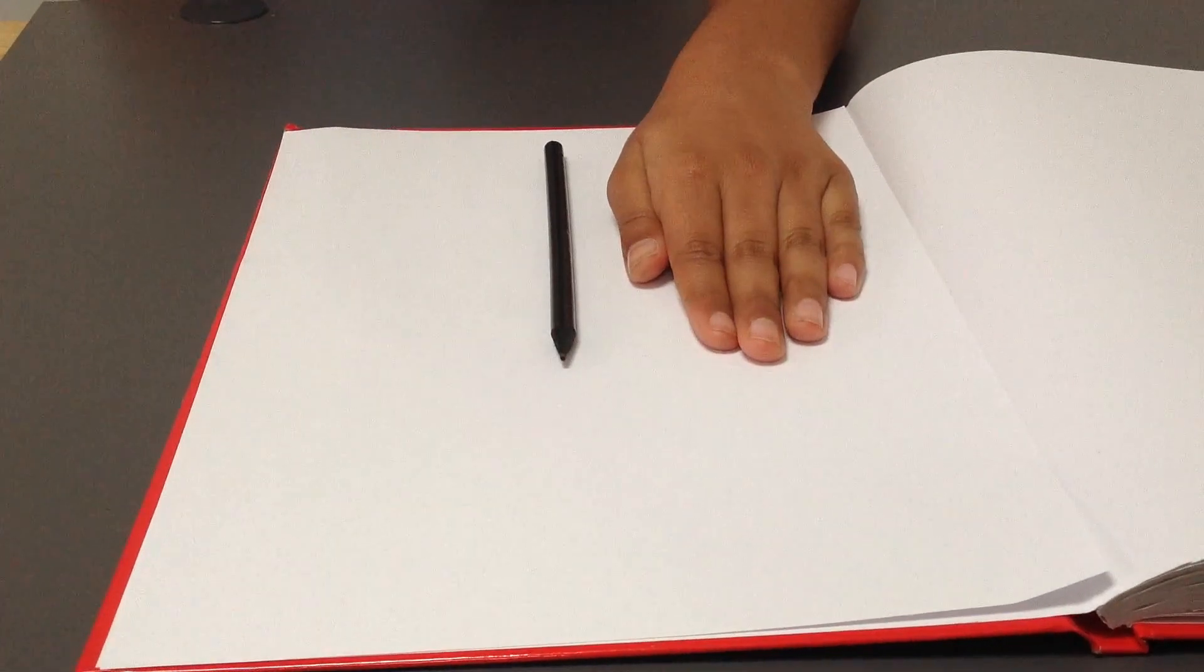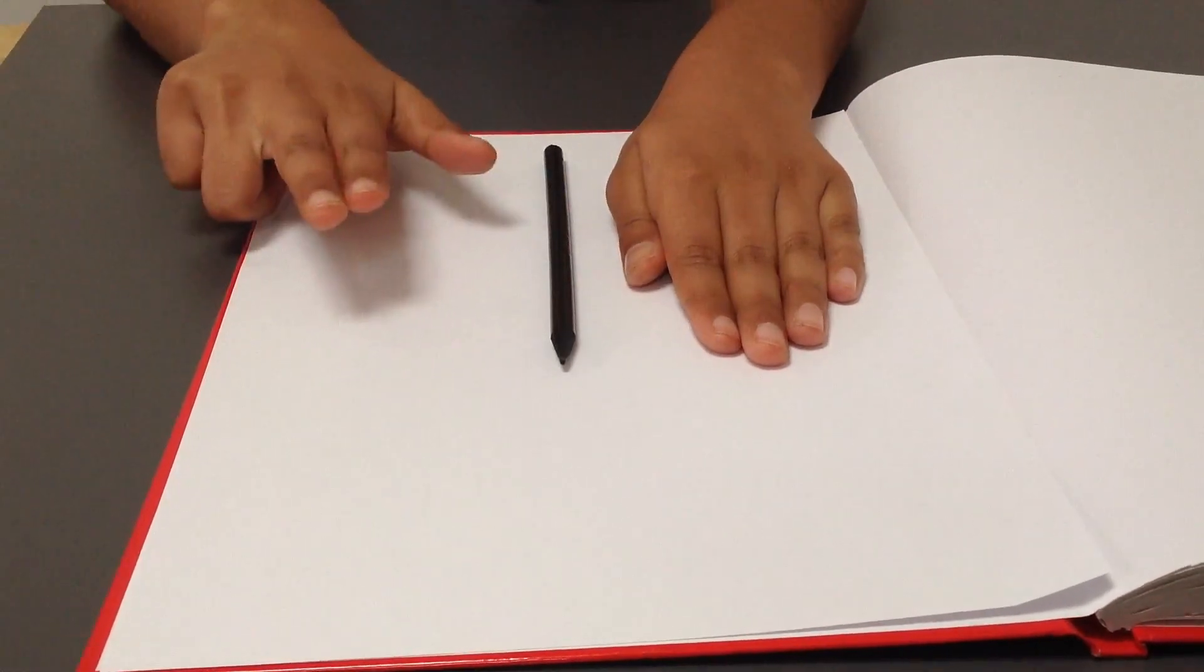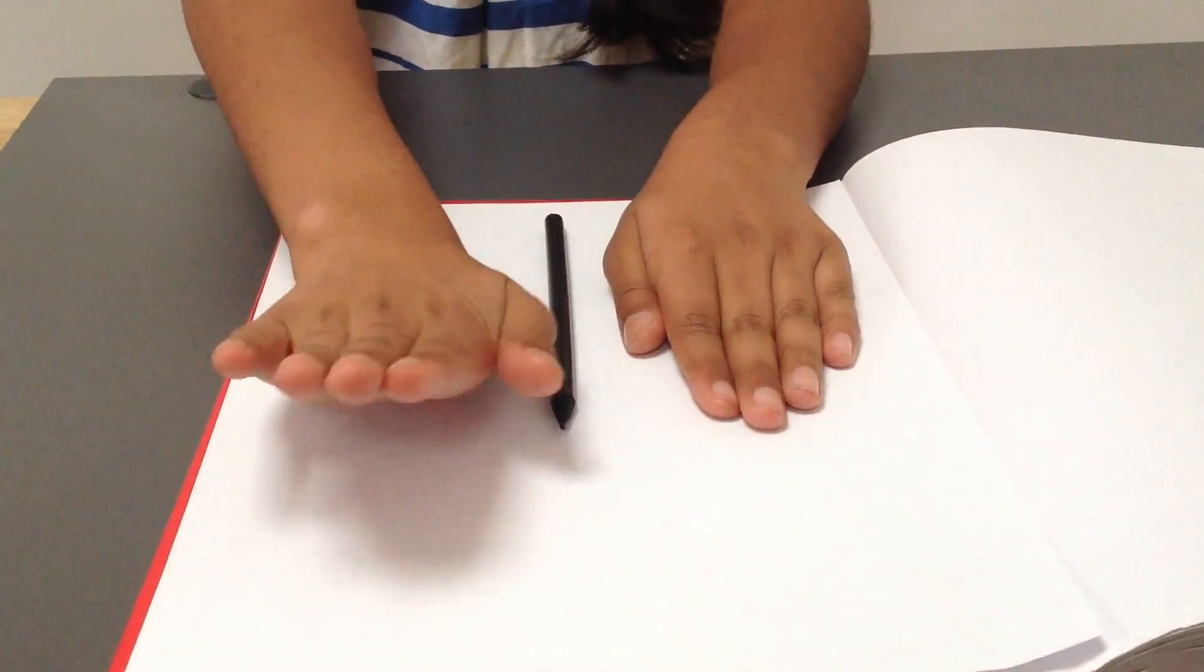To achieve this grip, you will want to keep your index finger, thumb and middle finger close to, but not touching, the tip of your pencil. You also want the tip of your pencil to face away from you.